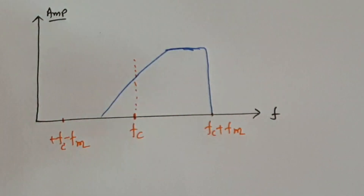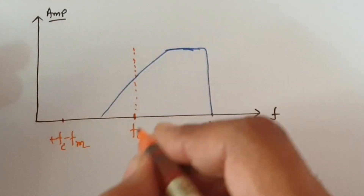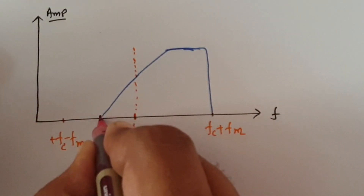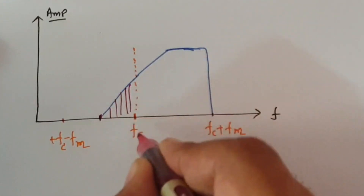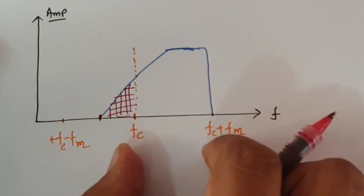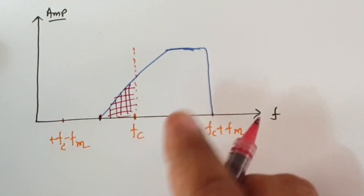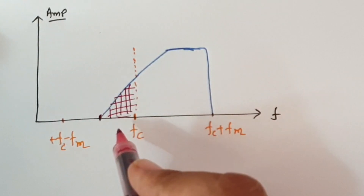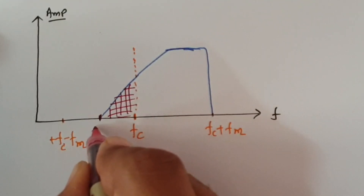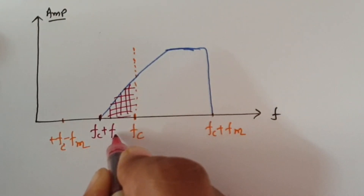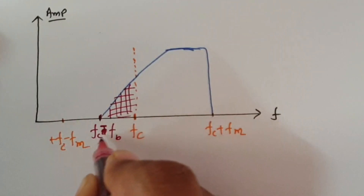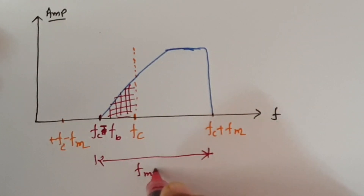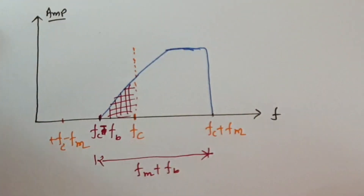If you observe this bandwidth for VSB modulation, there is additional bandwidth compared to SSB. For SSB, we send only one sideband. But for VSB, we send the upper sideband plus this vestigial sideband. So the frequency will be FC plus FB or FC minus FB, and the total bandwidth is FM plus FB, which is there with the vestigial sideband.